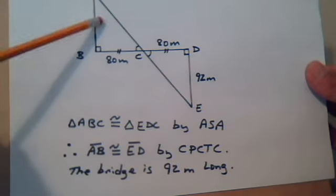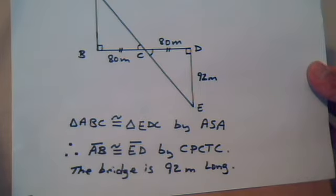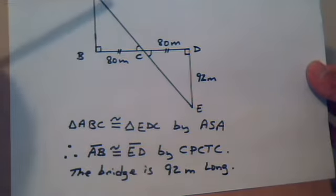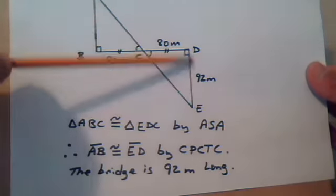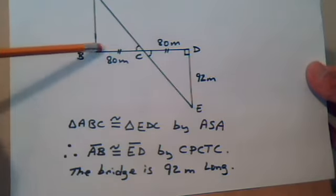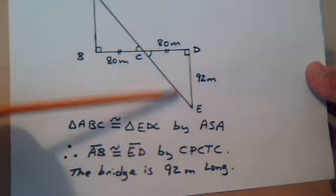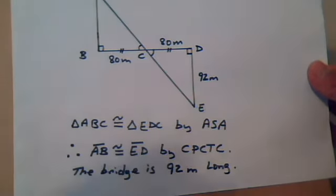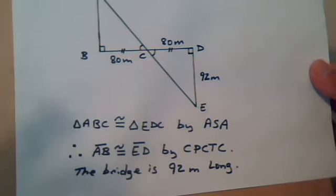Since these two are congruent, their matching parts are also congruent. This is equal to this, this equals this, this equals this, so their matching parts are also congruent.